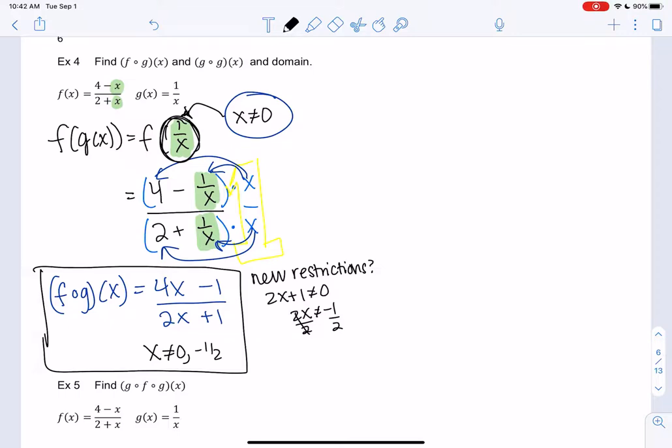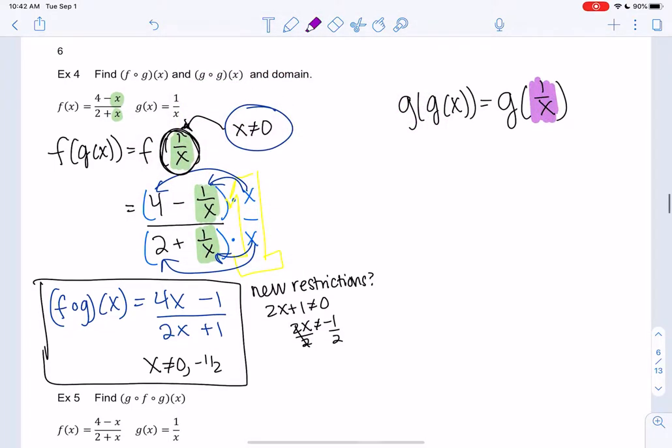So let's try g of g, and then we'll end this video. So g(g) just means you take g of x and you plug g of x into it, as weird as that is. So I'm going to plug 1 over x into g of x. So I'm going to replace the x with 1 over x, as weird as that is.